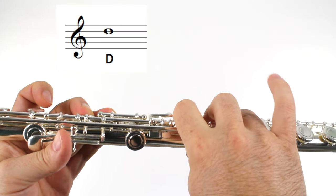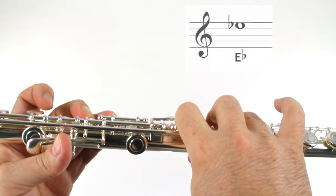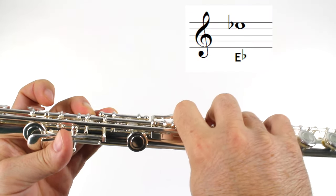So D is no pinky on the right hand. E-flat, we add the pinky on the right hand.